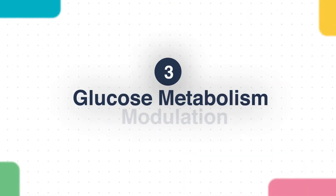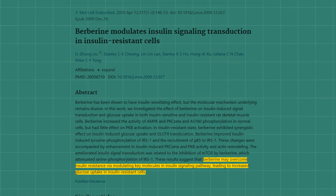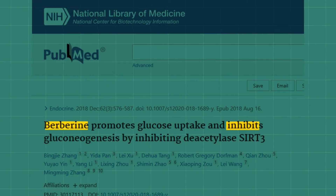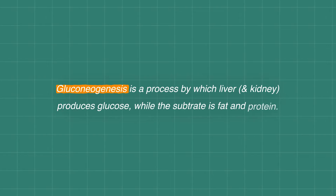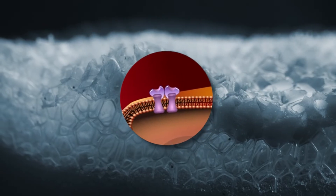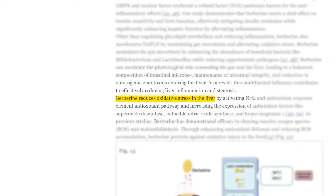Glucose metabolism modulation is another key effect. Berberine improves glucose metabolism in the liver by several mechanisms. It enhances insulin sensitivity by promoting insulin receptor signaling and glucose uptake in hepatocytes. Additionally, berberine inhibits gluconeogenesis — the process by which the liver produces glucose from fat and protein substrates — reducing glucose formation in the body and making insulin receptors in liver cells more sensitive, thereby lowering fasting blood glucose levels.